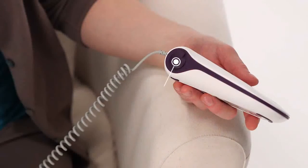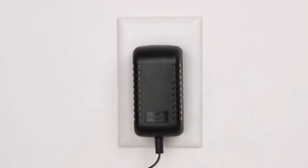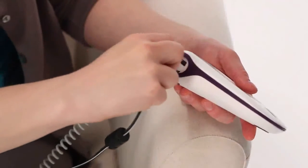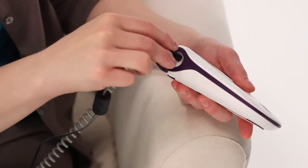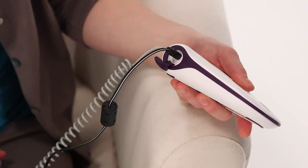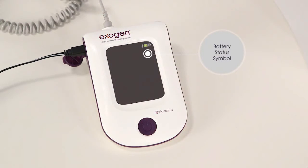Before you can begin using Exogen, you'll need to charge the battery. Plug the charger into an outlet. Open the cover of the USB port on the left side of your device and insert the USB portion of the charger into the device. The flashing battery status symbol lets you know the device is charging. Charge the battery until the symbol appears full. This will give you enough power for approximately five 20-minute treatments.